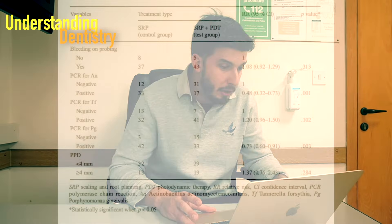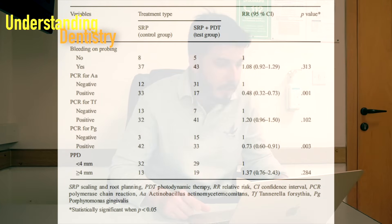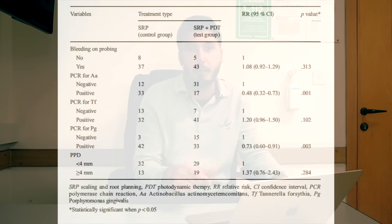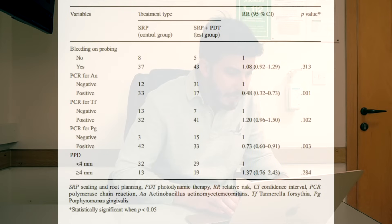They include qualitative variables for periodontal assessment: bleeding on probing (a nominal binary variable — yes or no), PCR for AA with three types of molecular biology laboratory tests, and periodontal probing depth categorized as more or less than four millimeters — turning it into a qualitative variable. Cross tabs were used for those comparisons, and Friedman tests were applied.